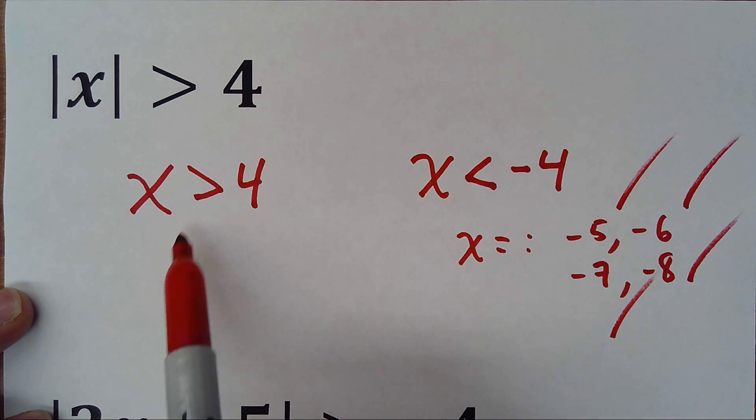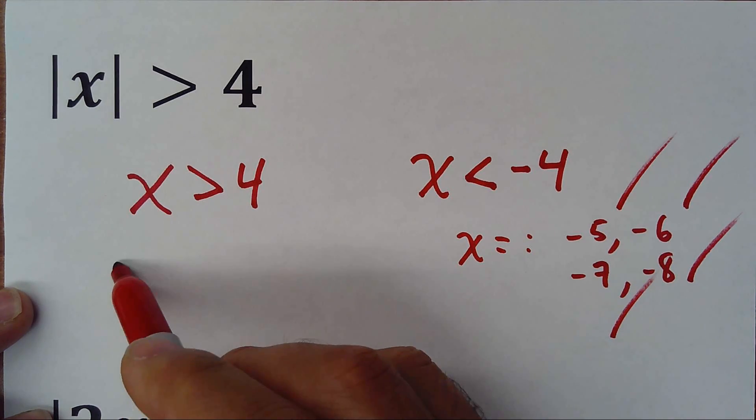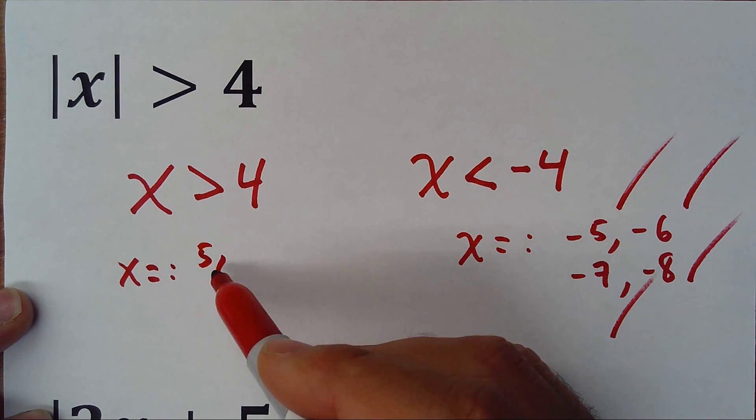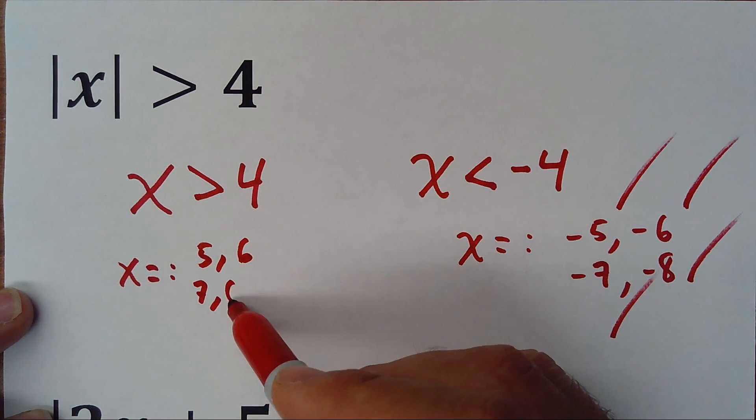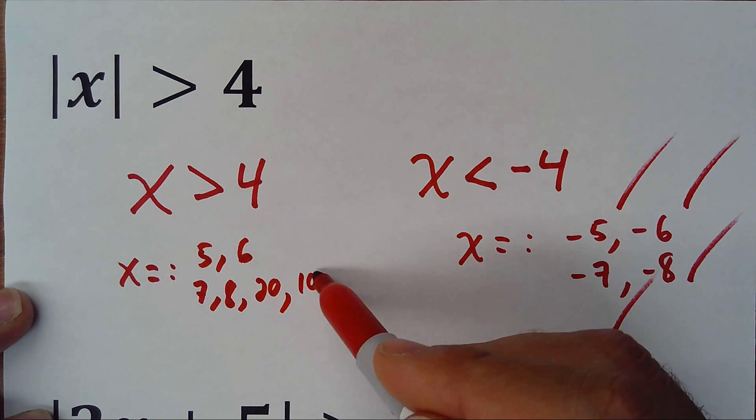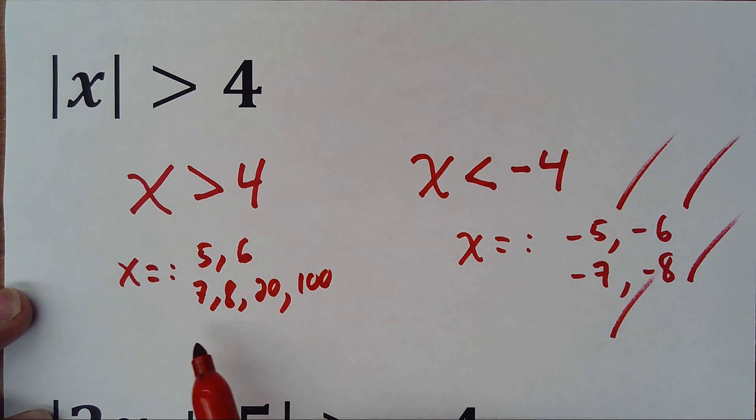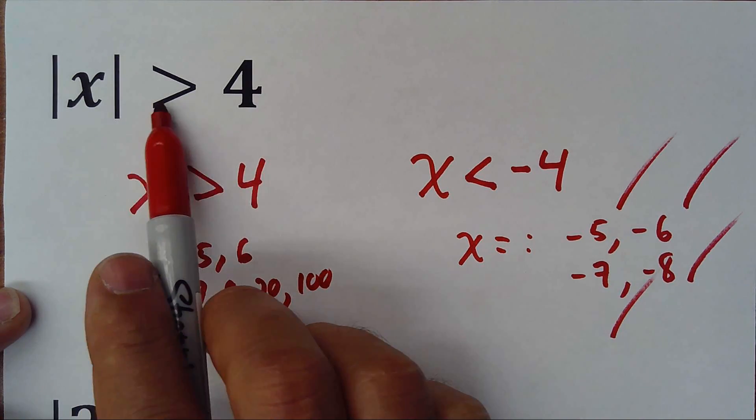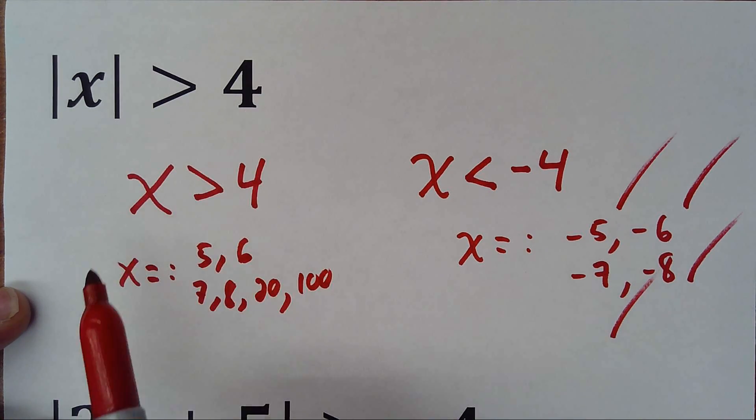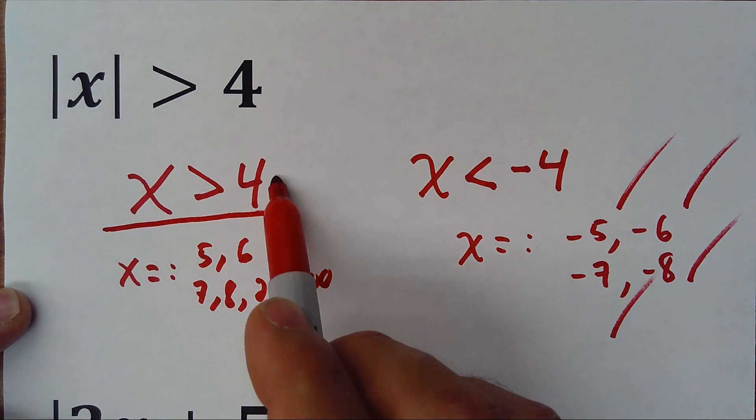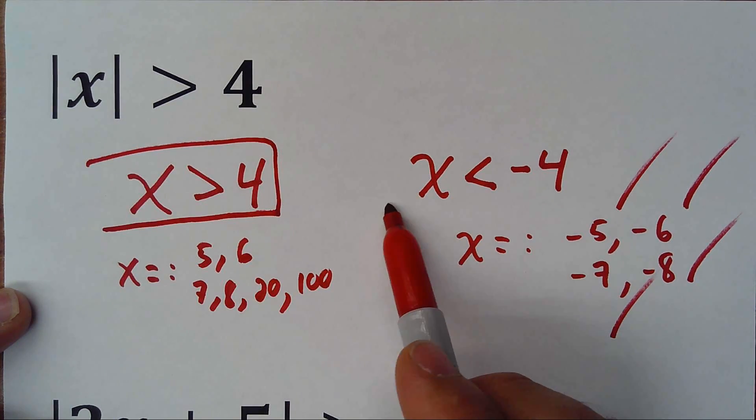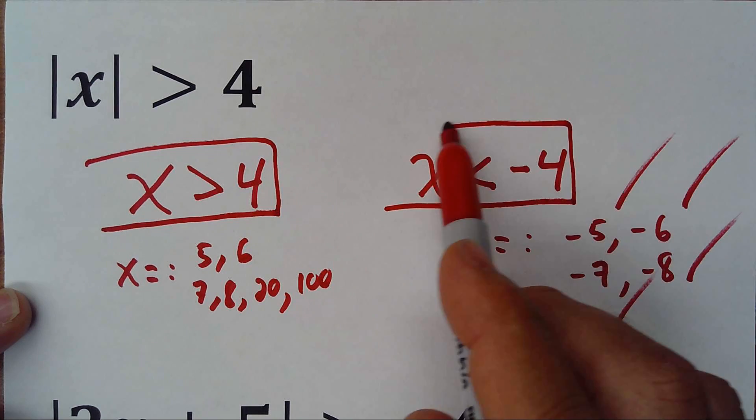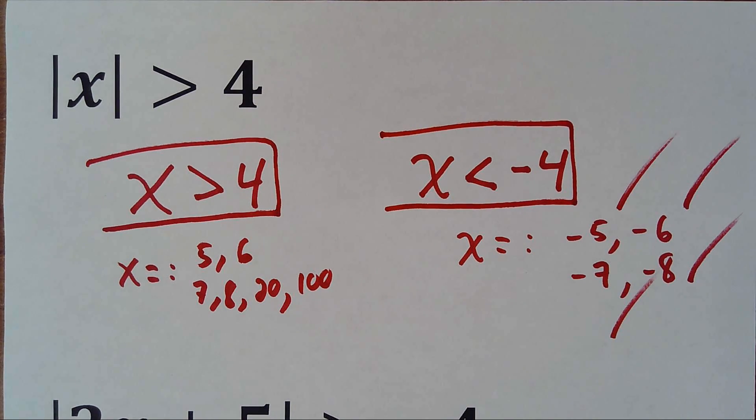But also, if x is greater than 4, means that x could be 5, 6, 7, 8, 20, 100. For all those values of x it's true that it will be greater than 4. So that's why we write two conditions: x is greater than 4 and x is less than negative 4.